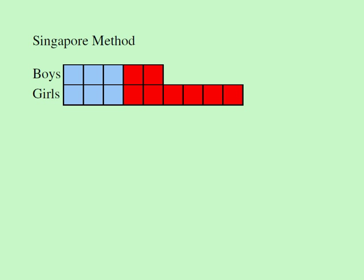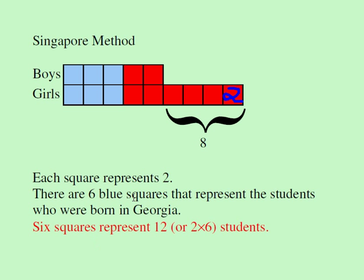According to the question, there were eight more girls than boys. The boys have five squares and the girls have nine squares, so the difference of four squares must equal eight. That tells us each square is worth two. The question asks how many boys and girls were born in Georgia — that's six squares total, each worth two, so two times six equals twelve. That's the answer — the Singapore way of doing it.